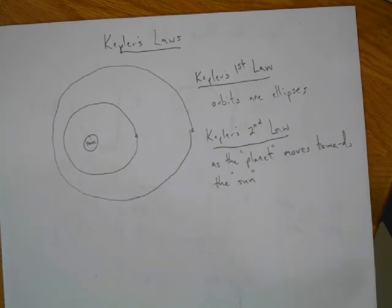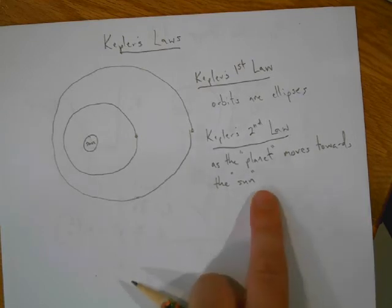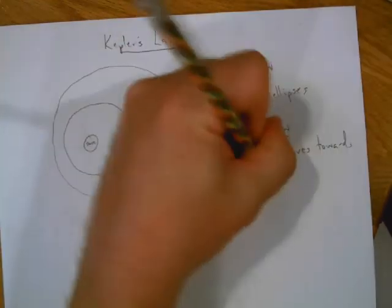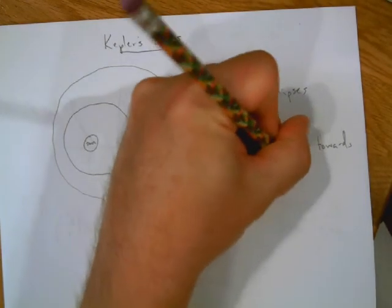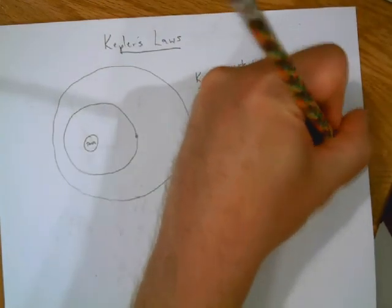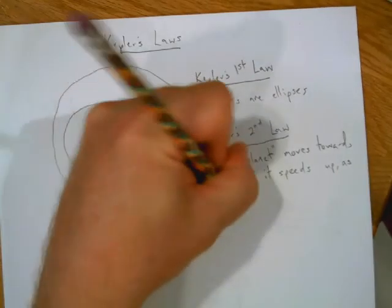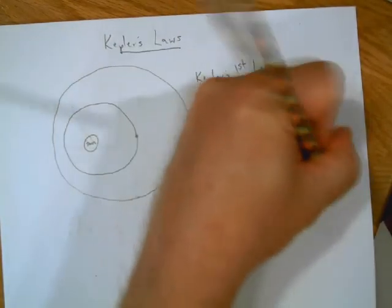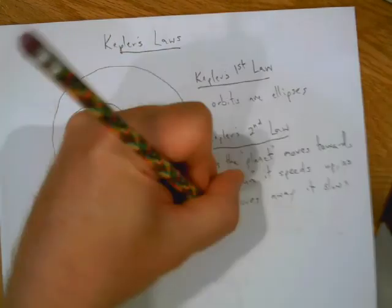If they're orbiting the earth, as that satellite moves towards the earth, it's going to speed up. As it moves away, it's going to slow down. So as the planet moves towards the sun, it speeds up. As it moves away, it slows down.